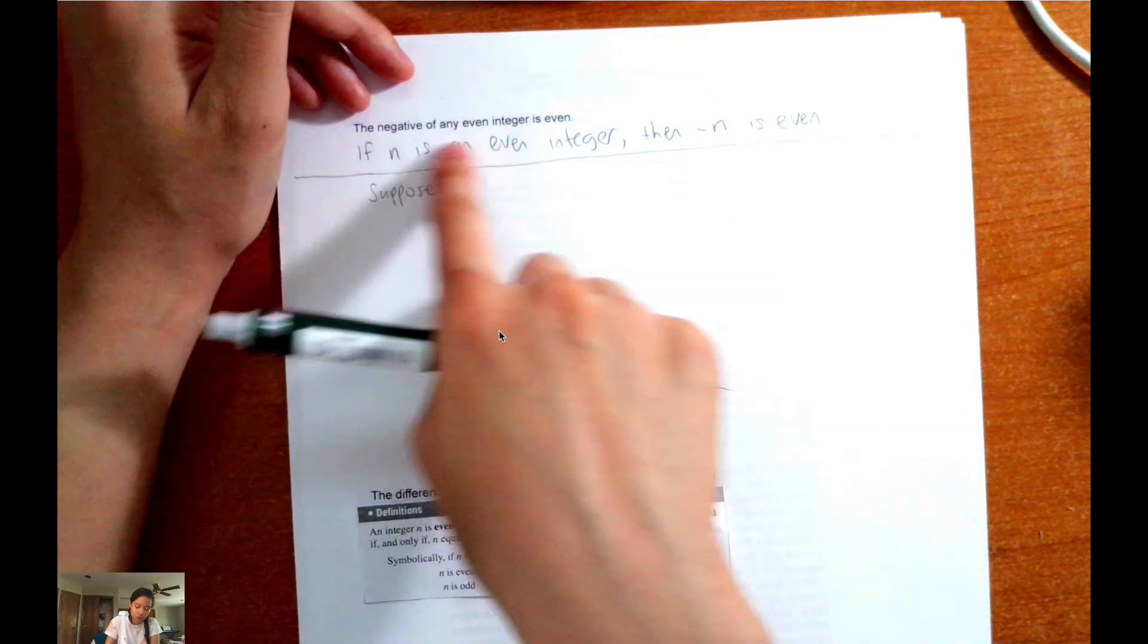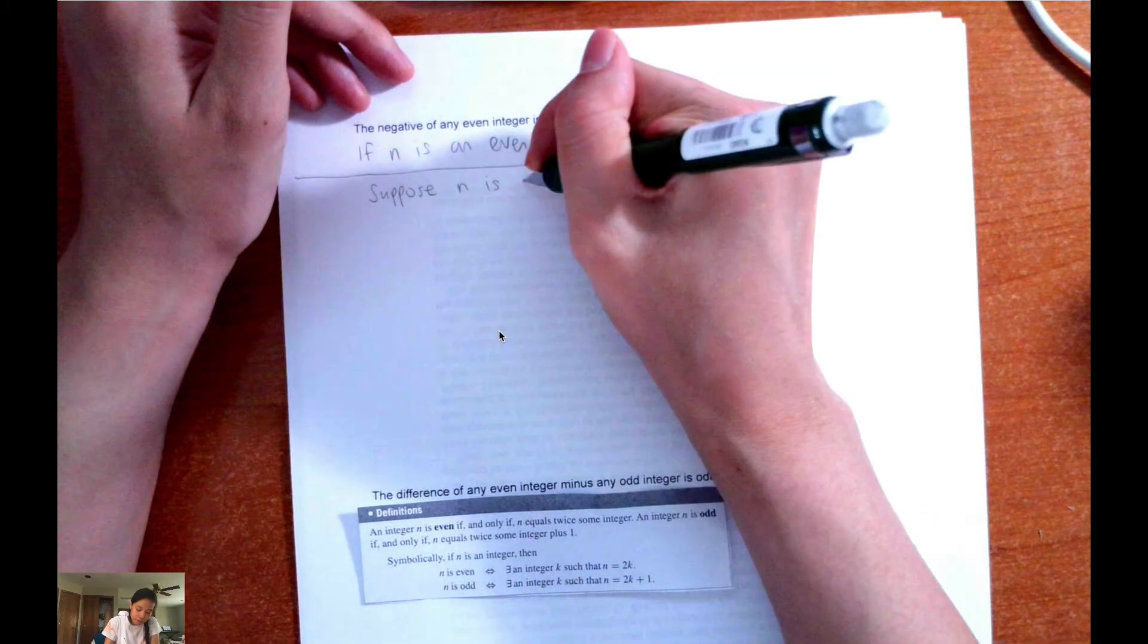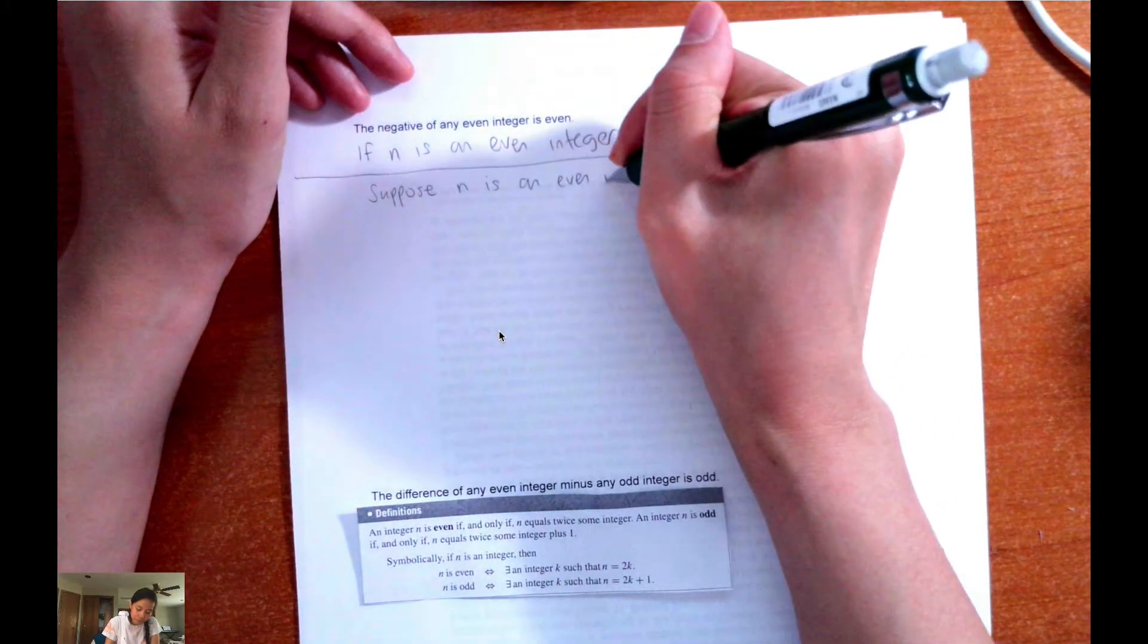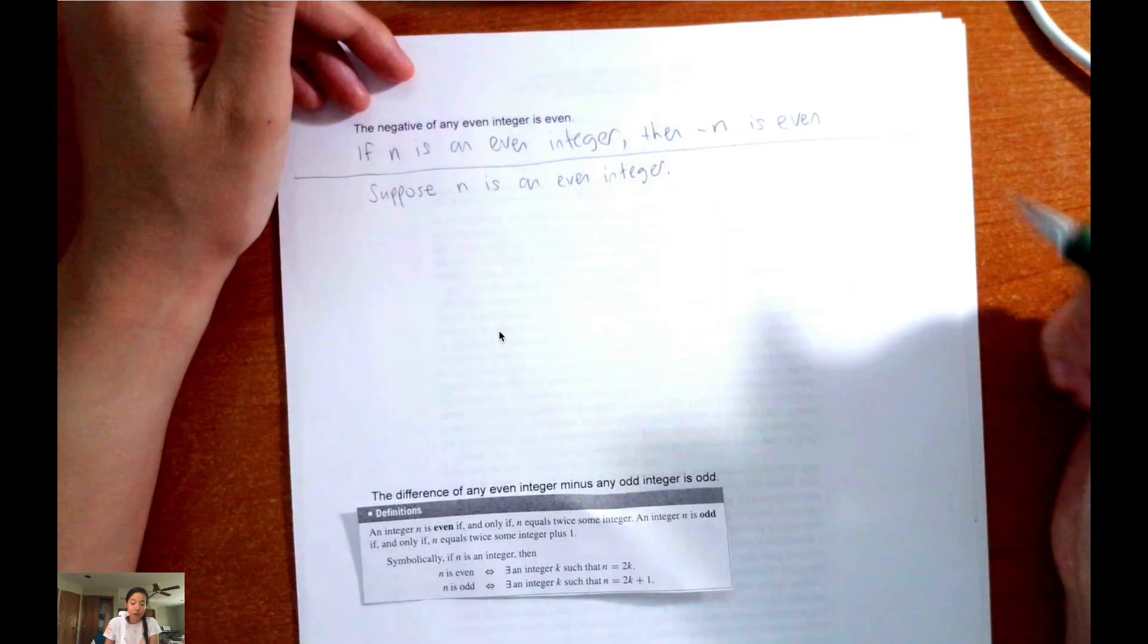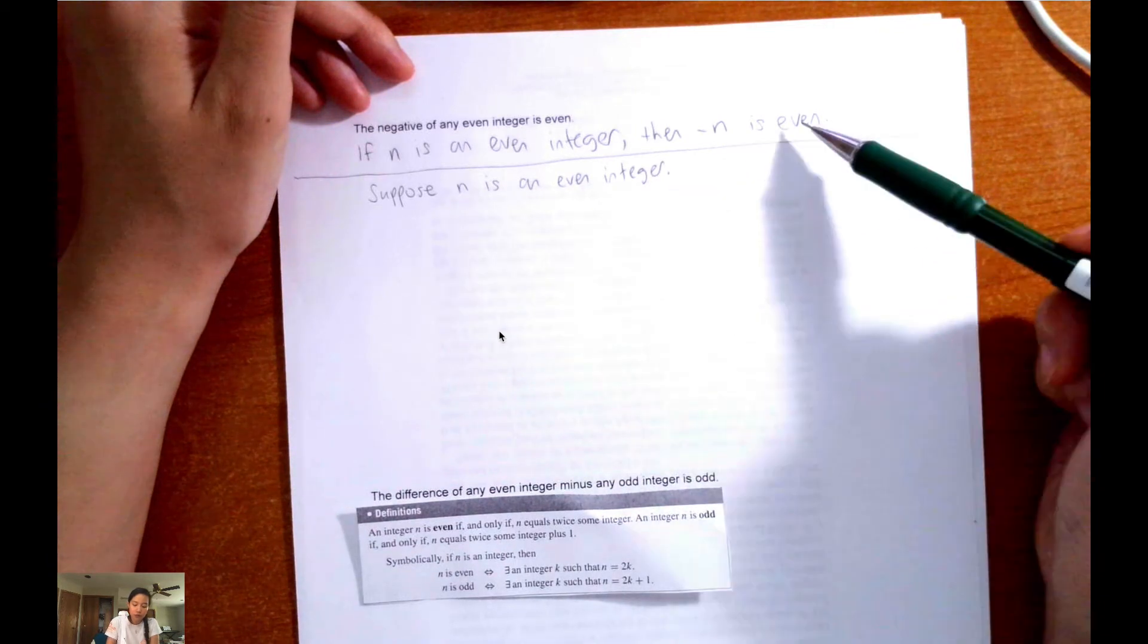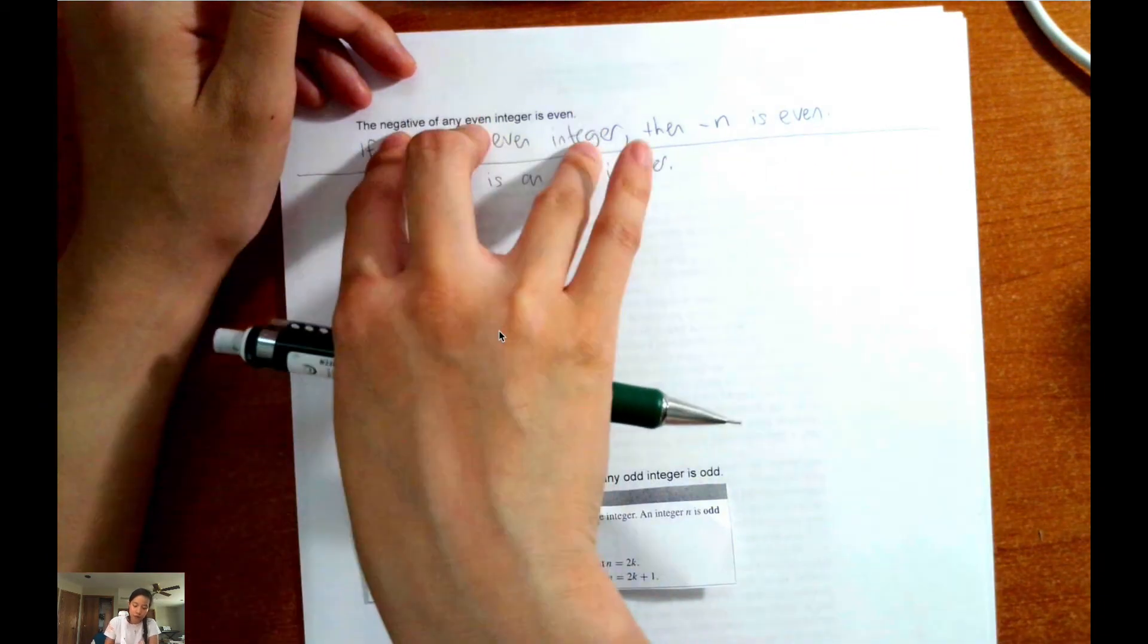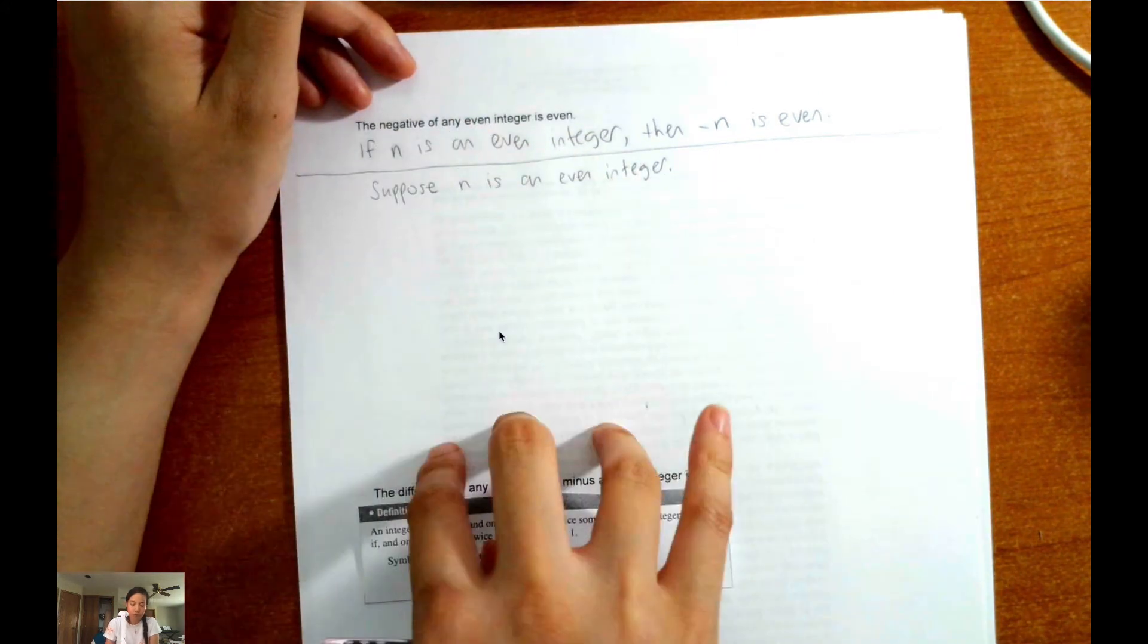the if-then statement. So suppose n is an even integer, and then the very last sentence of your proof would be, thus negative n is even. So the first sentence is the first part of the if-then statement, and then the last part of your proof is the then part of the if-then statement.